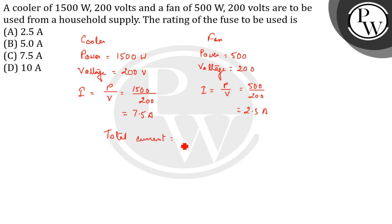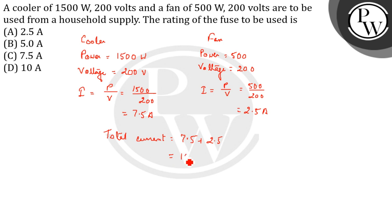The fan current gives us 2.5 amperes. So the total current will be the current for the cooler plus the current for the fan, which is 7.5 plus 2.5, giving us 10 amperes. So the correct answer is option D: 10 amperes. Thank you.